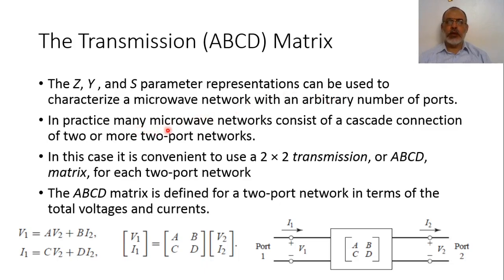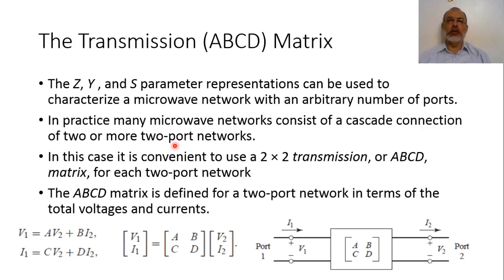However, in practice, many microwave networks consist of cascaded connections of two or more two-port networks. As an example, in the case of a microwave amplifier, we have an input matching network, which is a two-port network, followed by the amplifier, which is another two-port network. The output of the amplifier is connected to an output matching network, which is a third two-port network. And maybe we use a band-pass filter after the output matching network, which is a fourth two-port network.